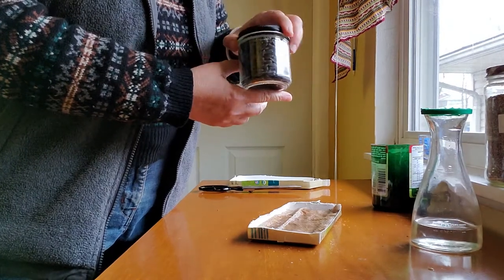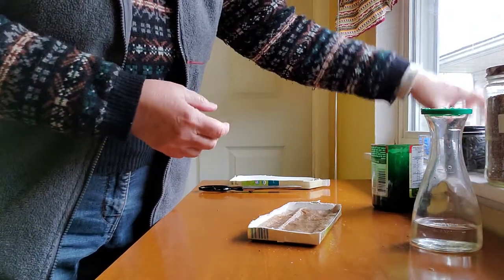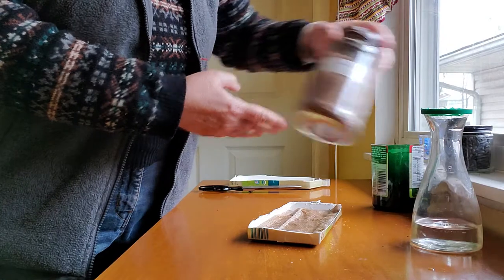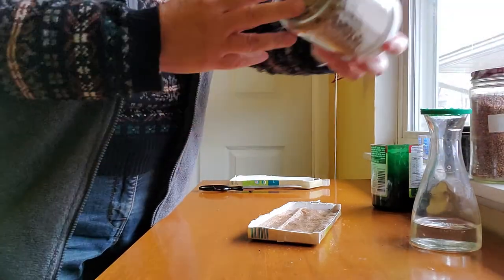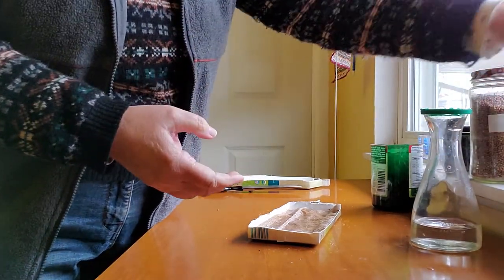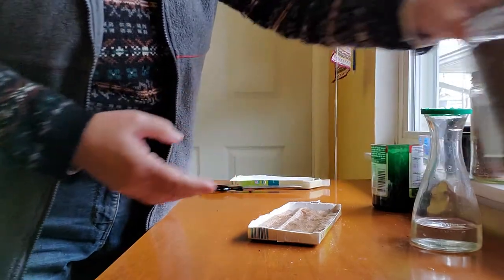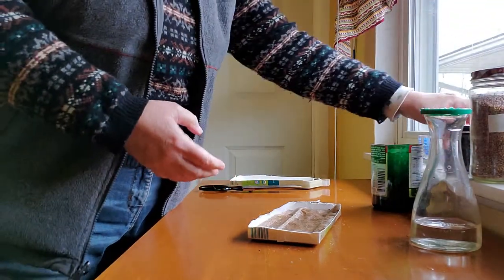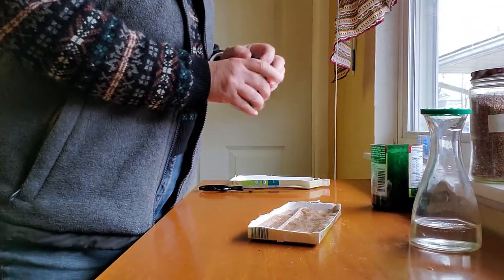I have here bird seed, sunflower seed, which is what I'm going to plant today. I have radishes, pea seeds, and then broccoli. So let's go with the sunflower seeds.